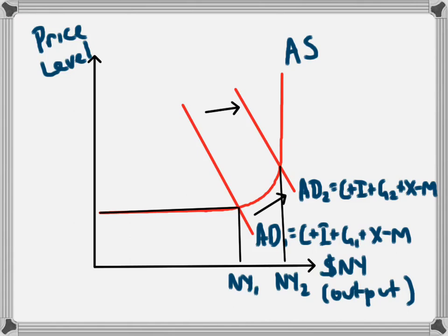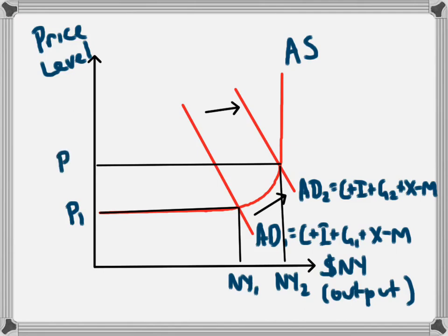Originally the price level was at P1, but the increase in aggregate demand has led to a new equilibrium price level of P2. So in addition to an increase in national income and an increase in output, there has also been an increase in the general level of prices, which we would call inflation. So there is an inflationary effect of fiscal policy.